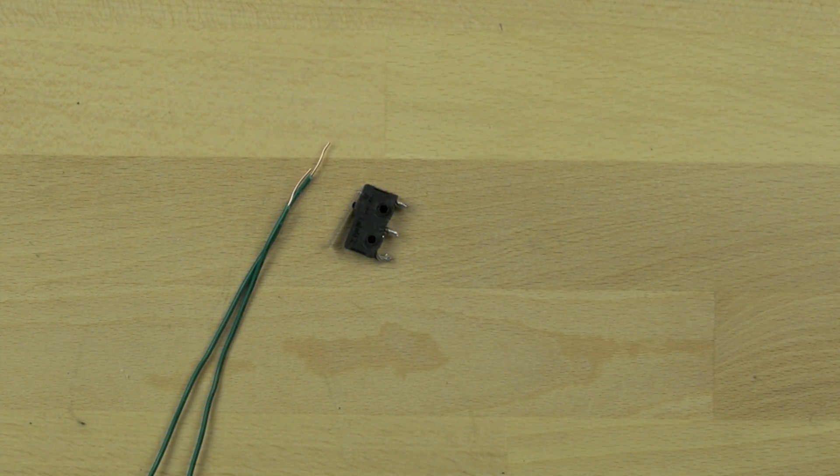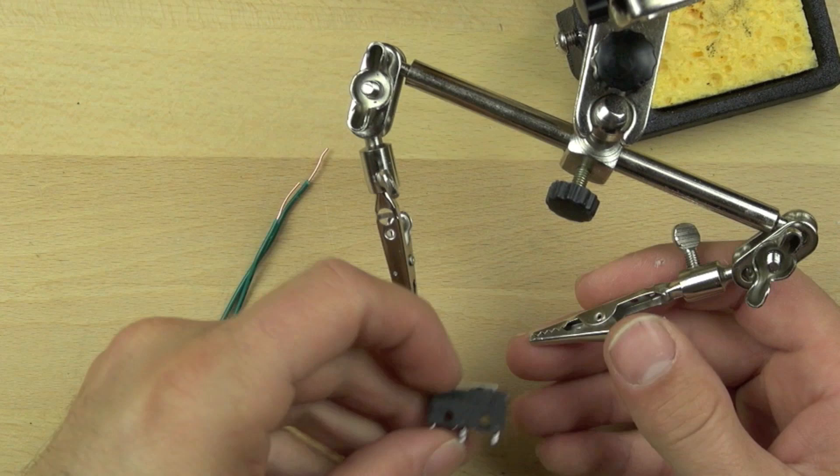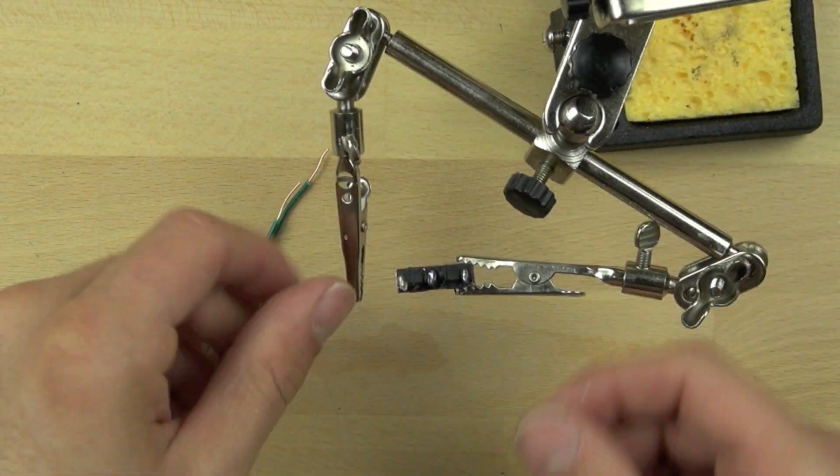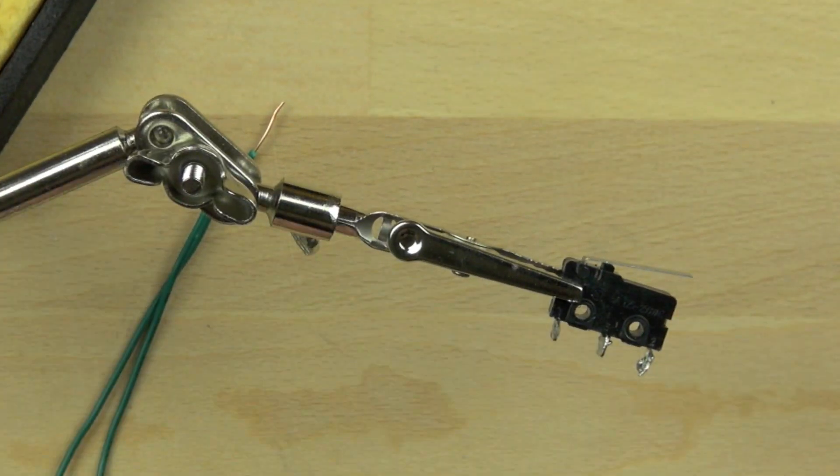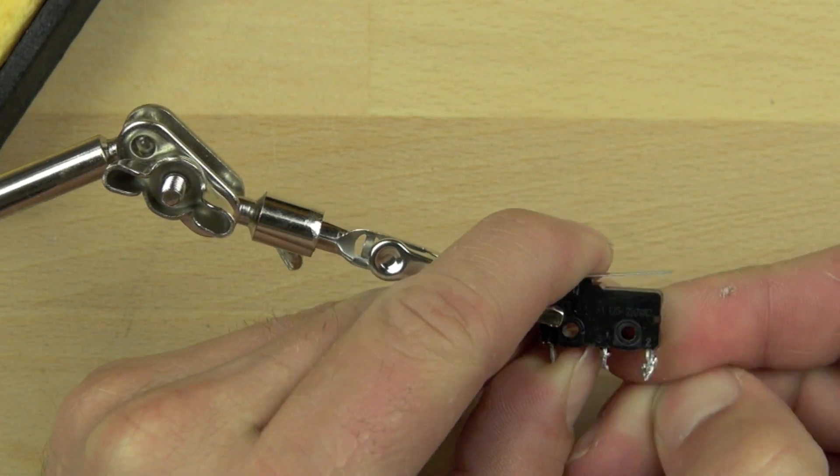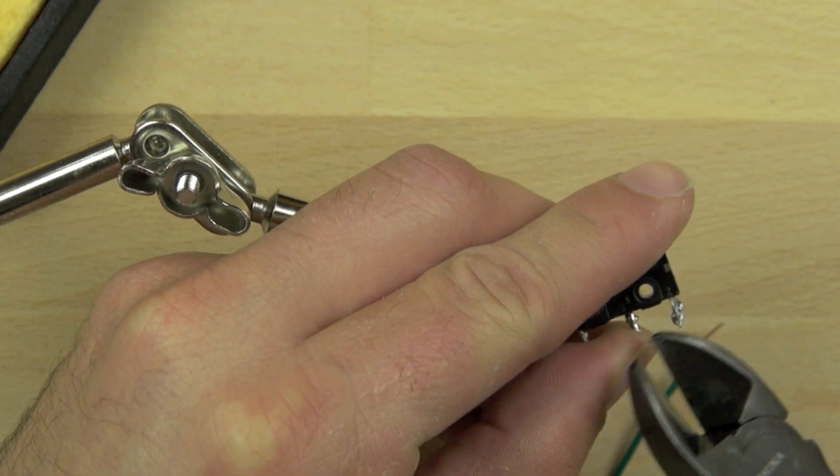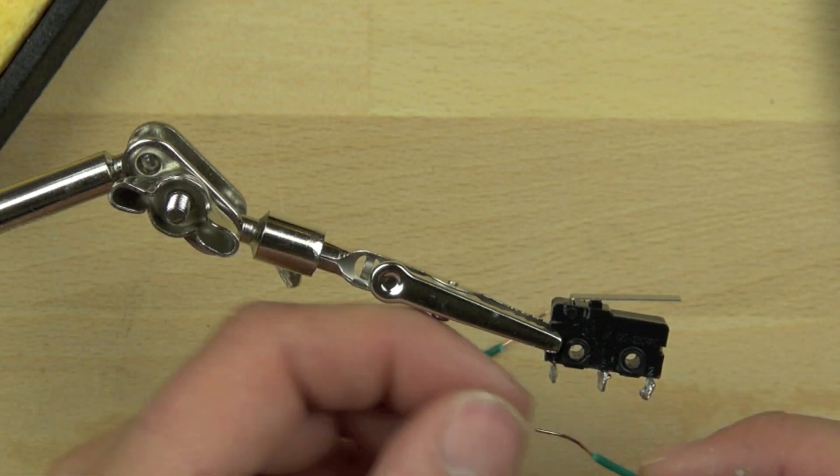You can buy micro lever switches like this from RadioShack or a variety of places online. Now we've got our alligator clips and we're going to bend the wire around the 1 and 3 contacts so that we can get a good connection.